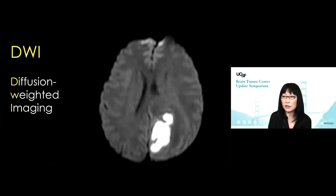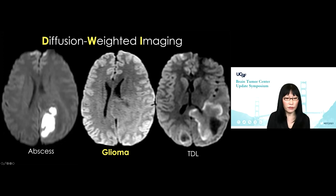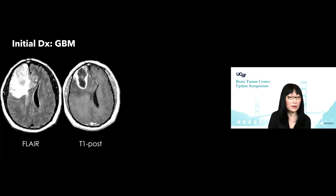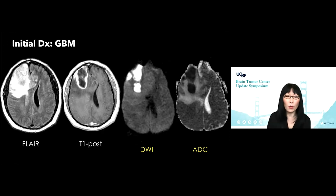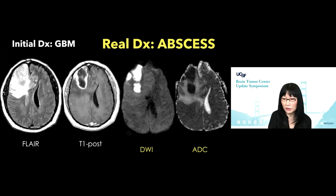Moving on to DWI — this is a critical sequence that tells us something no other sequence can. There are really three patterns of DWI we look for in patients presenting with a brain mass: homogeneously reduced diffusion, diffusion that disappears in the background, and lesions with a leading edge of reduced diffusion. Here's a gentleman referred to us with a stated diagnosis of right frontal glioblastoma. But once you add diffusion and ADC map, the whole rim-enhancing lesion is homogeneously reduced — this is hallmark, pathognomonic of an intracranial abscess.